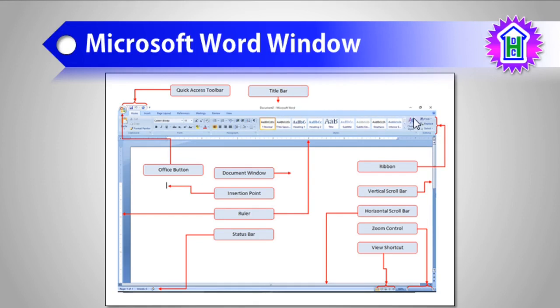To the right side of the title bar, we have three window buttons. The first one is Minimize, the second one is Maximize or Restore, and the third one is Close. I think you are acquainted with these buttons.